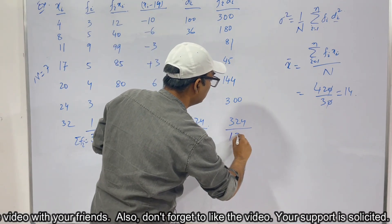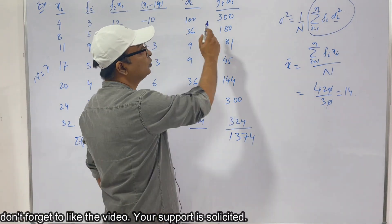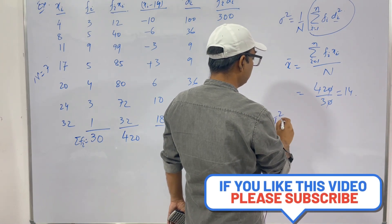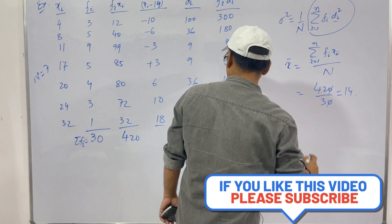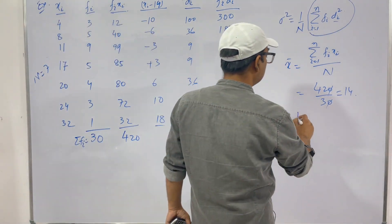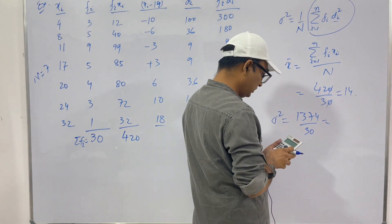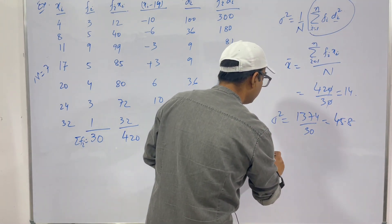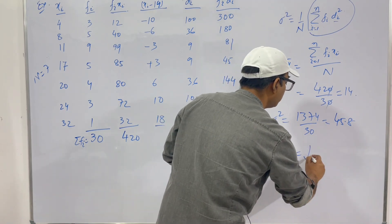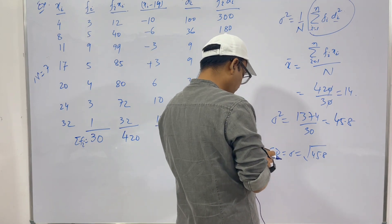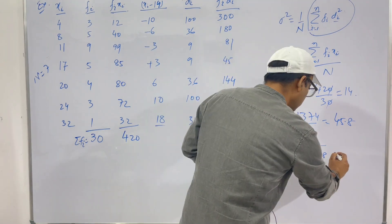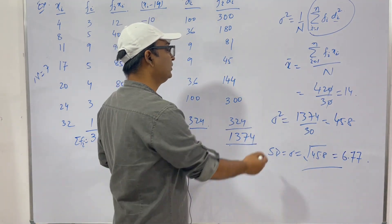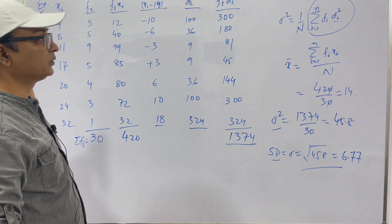Summing fi·di² gives Σfi·di² = 1374. Variance σ² = (1/n) · Σfi·di² = 1374/30 = 45.8. Therefore standard deviation σ = √45.8 ≈ 6.77. We have found the variance and standard deviation of this discrete frequency distribution.